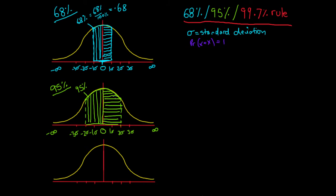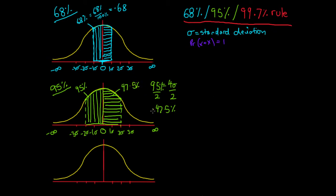To work out what percentage of data lies in each half, we use simple math. If 95% is spread across four standard deviations — from negative two to positive two — we divide by two to get each half. So 95% divided by 2 gives us 47.5%. That means 47.5% of the data is in the horizontally shaded area and 47.5% in the vertically shaded area. That is our 95% rule.